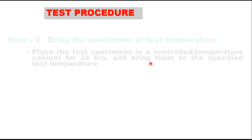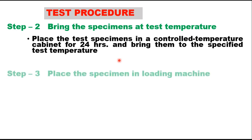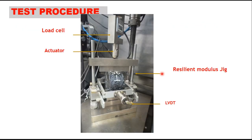The second step is to bring the specimen to test temperature. The Marshall specimen or core sample should be placed in a controlled temperature cabinet for 24 hours and brought to the specified test temperature, which is generally 25 degrees centigrade. Then place the specimen in the loading machine.